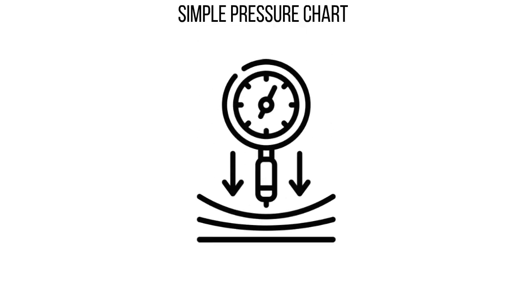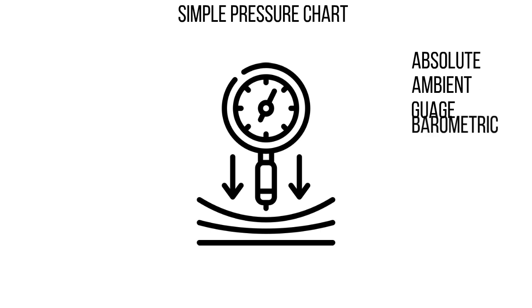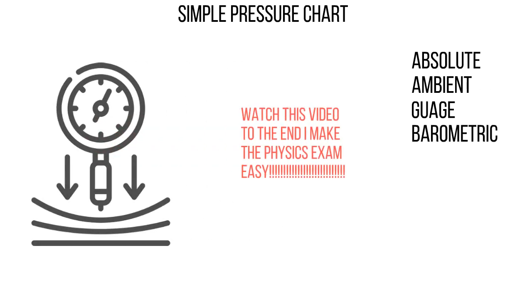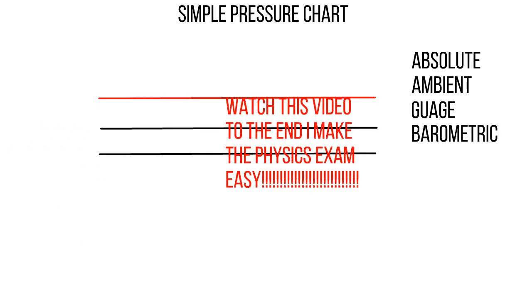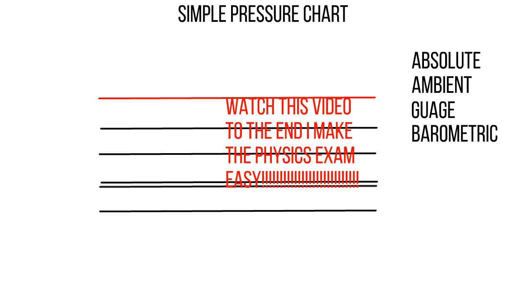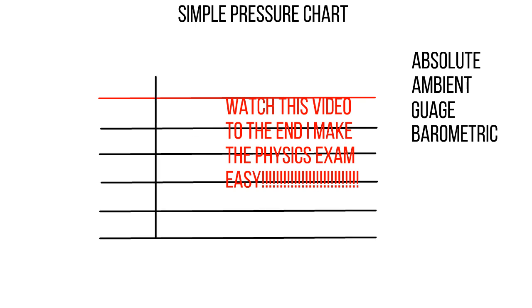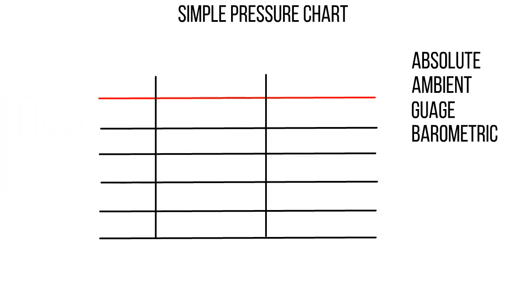Let's talk pressure and the different types of pressure that may come up in the exam. We've got absolute and ambient, we've got gauge, we've got barometric. The first thing you always want to do when you're doing the written theory exam is draw up a pressure chart on your blank bit of paper. It's a very easy chart to just draw up and refer to.